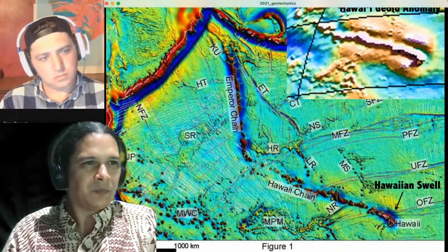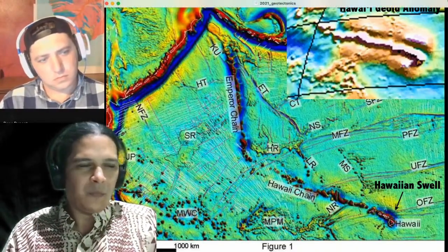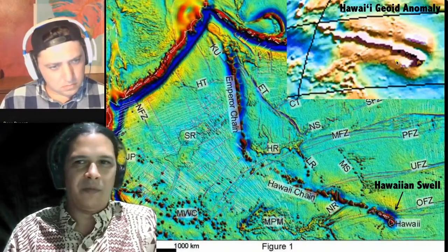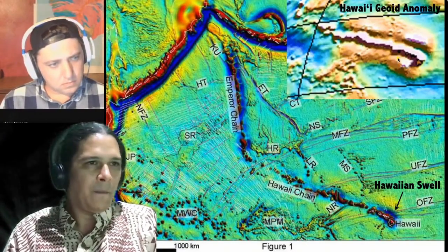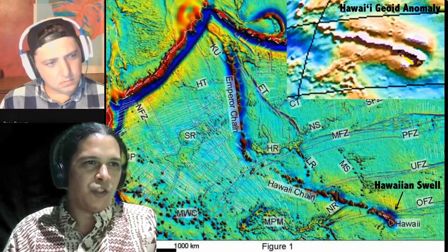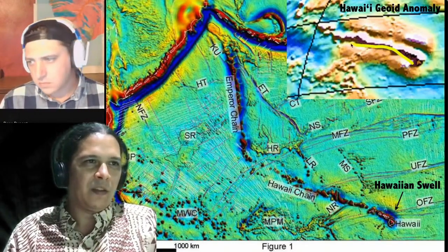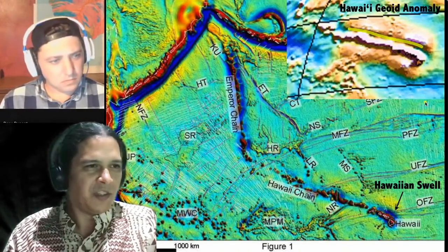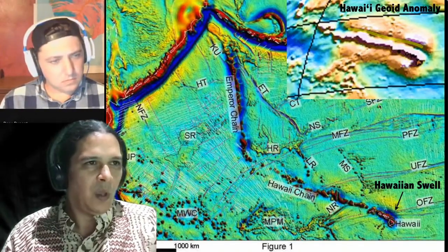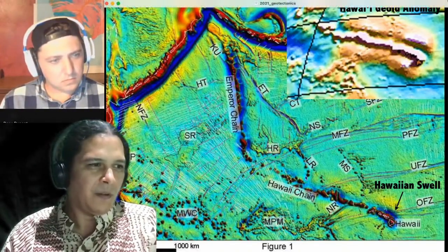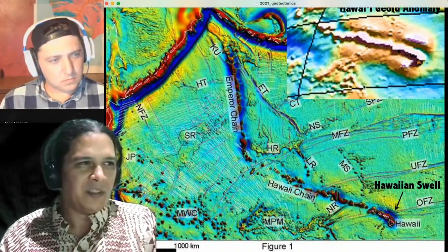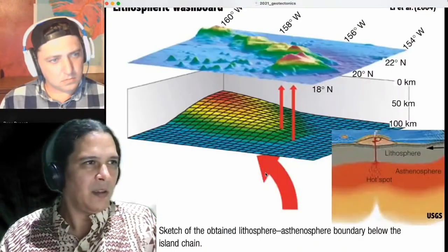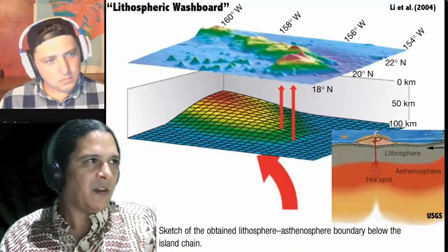Here's a little more zoomed-in view — a bit more pixelated but with more contrast — showing how much the gravity differs there. I won't go into the geoid any further, as there are a lot of other concepts to cover.